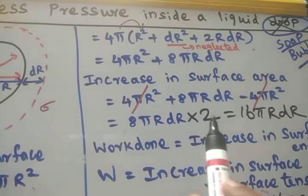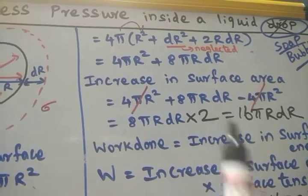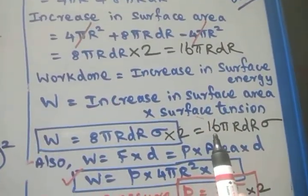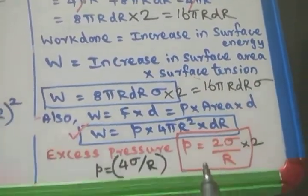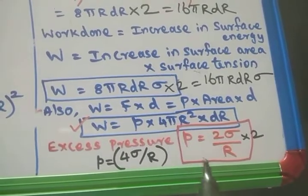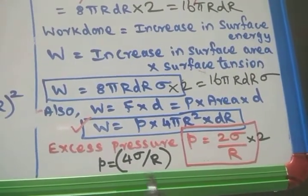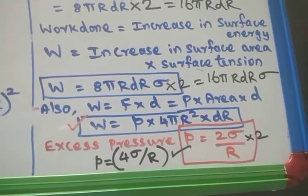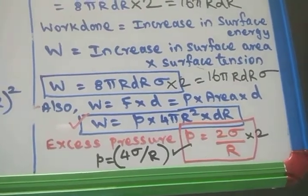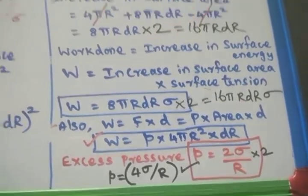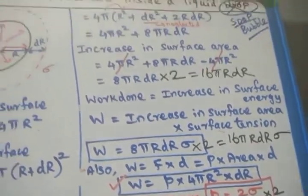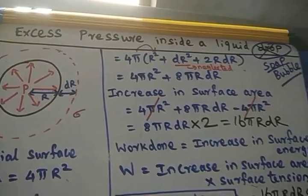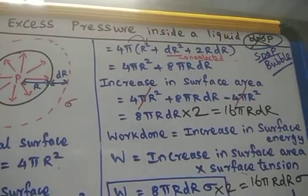Here you have to put a factor of 2 because the soap bubble has 2 free surfaces. In the examination, they may ask either for the liquid drop or the soap bubble. Don't forget to include the factor of 2 for the soap bubble case, giving the final answer 4 sigma by R.